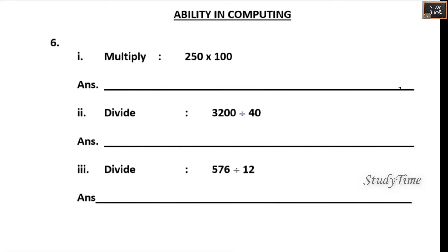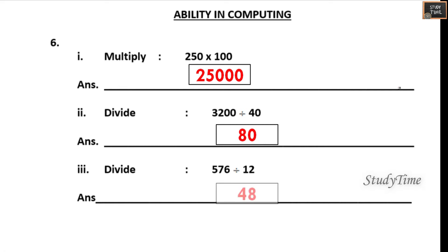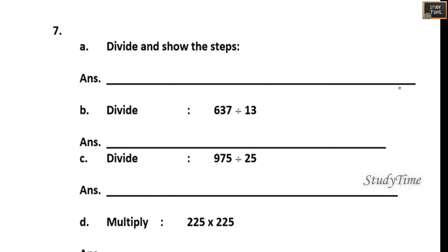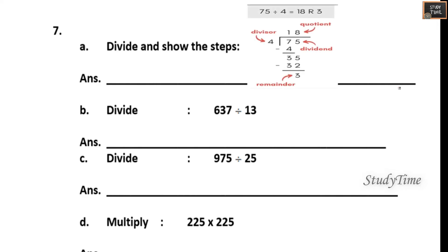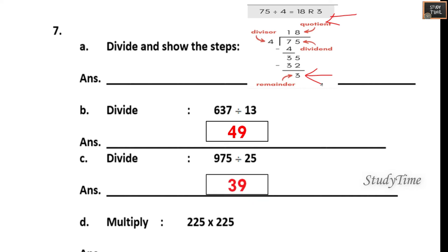Ability in computing: 250 into 100 is 25,000; 3200 divided by 40 is 80; 576 divided by 12 is 48. Next, 75 divided by 4 — the quotient is 18 and the remainder is 3. Multiply 225 into 225 that is 50,625.